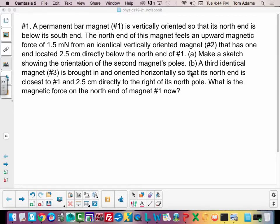All right, so for problem number one, it says a permanent bar magnet number one is vertically oriented so that the north end is below its south end. The north end of this magnet feels an upward magnetic force of 1.5 millinewtons from an identical vertically oriented magnet number two that has one end located 2.5 cm directly below the north end of number one.